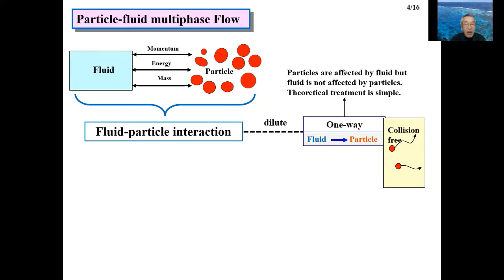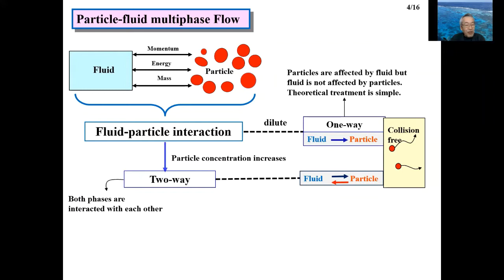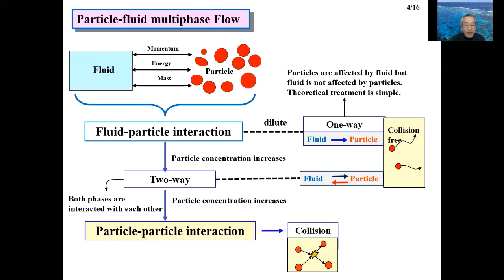As concentration increases, the coupling mode changes from one-way to two-way coupling — that is, the fluid motion is also affected by particles. When the coupling becomes two-way, particles begin to collide with each other. If the collision frequency is not so high, the inter-particle collision is not very influential. As concentration increases further, it is necessary to consider inter-particle collision in addition to two-way coupling, because the flow structure such as particle distribution is influenced by these collisions. Such flows are called collision-dominated flows.